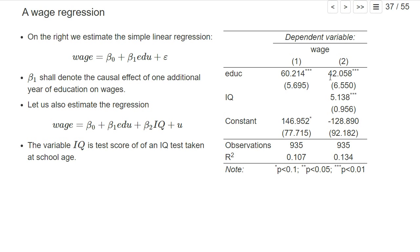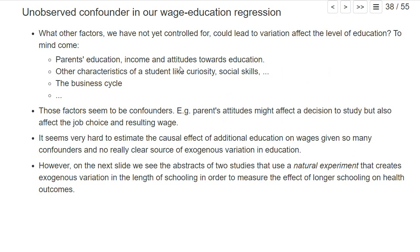To assess whether this estimate already seems like a pretty good estimate of the causal effect of additional education, we have to think about what other reasons cause years of education to differ between people in our sample. Are these sources of exogenous variation, or are there probably also some confounders? Let's think about what other factors could lead to variation in the level of education.